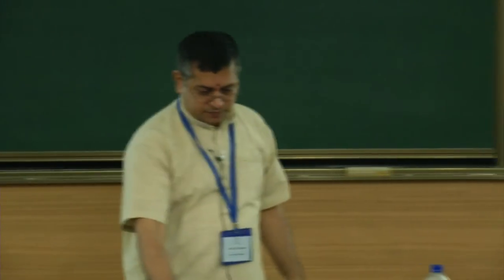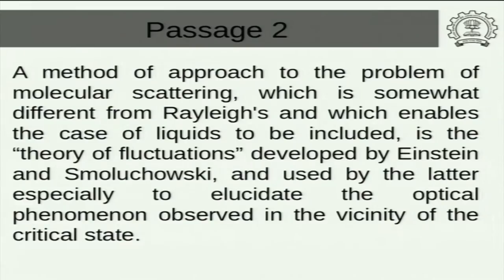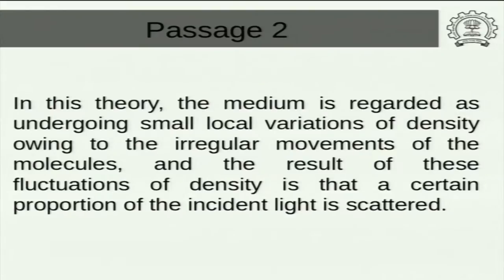This is passage 1. This is passage 2. The method of approach to the problem of molecular scattering, which is somewhat different from Rayleigh's and which enables the case of liquids to be included, is the theory of fluctuations developed by Einstein and Smoluchowski, and used by the latter especially to elucidate the optical phenomenon observed in the vicinity of the critical state. In this theory the medium is regarded as undergoing small local variations of density owing to the irregular movements of the molecules, and the result of these fluctuations of density is that a certain proportion of the incident light is scattered.